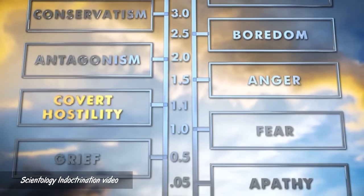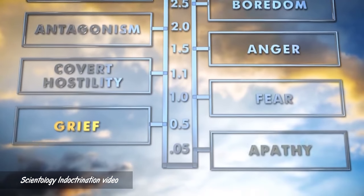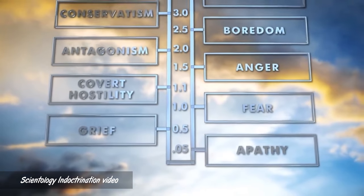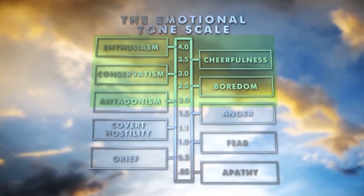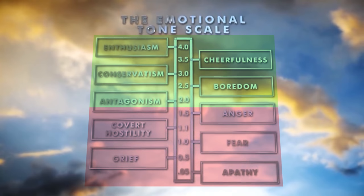In Scientology, anything considered survival or good for you exists on this scale. Any action or emotion exists on this scale from 2.0 up. Anything below that is moving you towards death, towards total failure. And I want to hone in on a very specific tone, which is the 1.1 covert hostility tone.